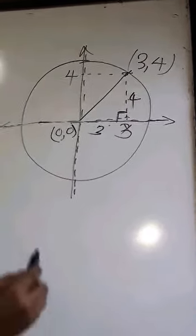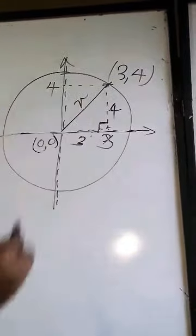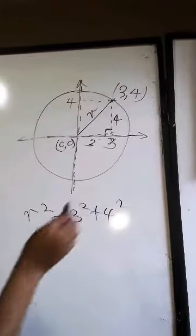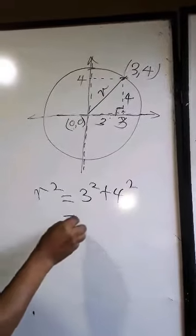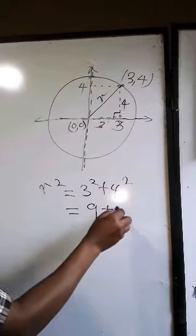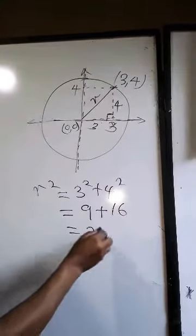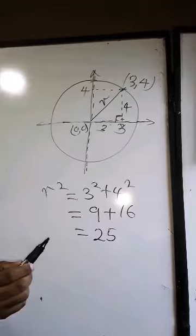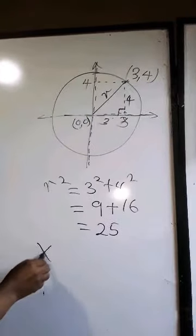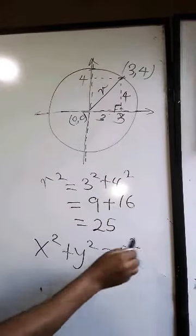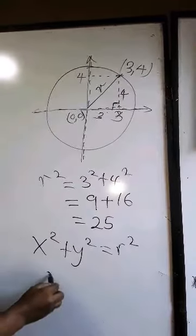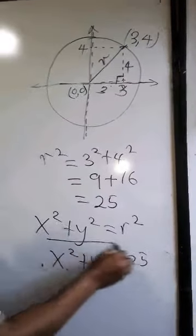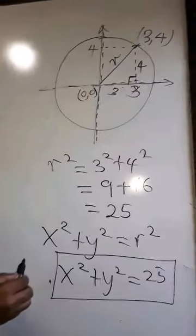This gives us a Pythagorean triangle. Using the Pythagorean theorem, r squared equals 3 squared plus 4 squared, which is 9 plus 16, giving us 25. The equation of a circle whose center is (0, 0) is x squared plus y squared equals r squared, so we get x squared plus y squared equals 25. This is the equation for that circle.